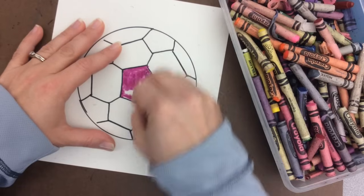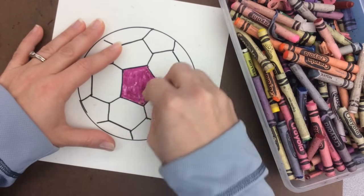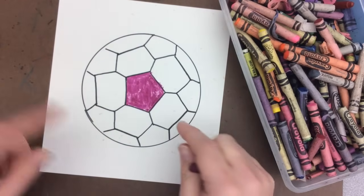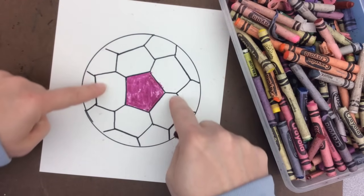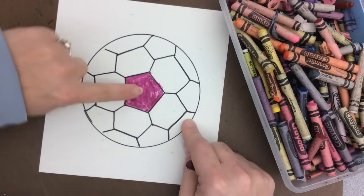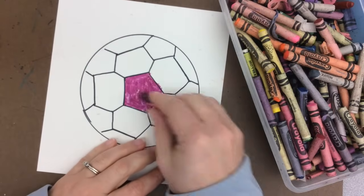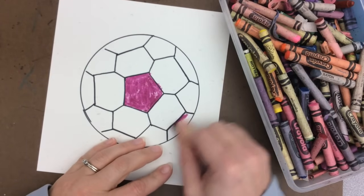After that section is done, we need to do the other parts of the soccer ball, but there's like a space. So all the way around here is going to stay white. Remember how we went straight out from our first pentagon to the edge? Those are the ones that are going to be colored.